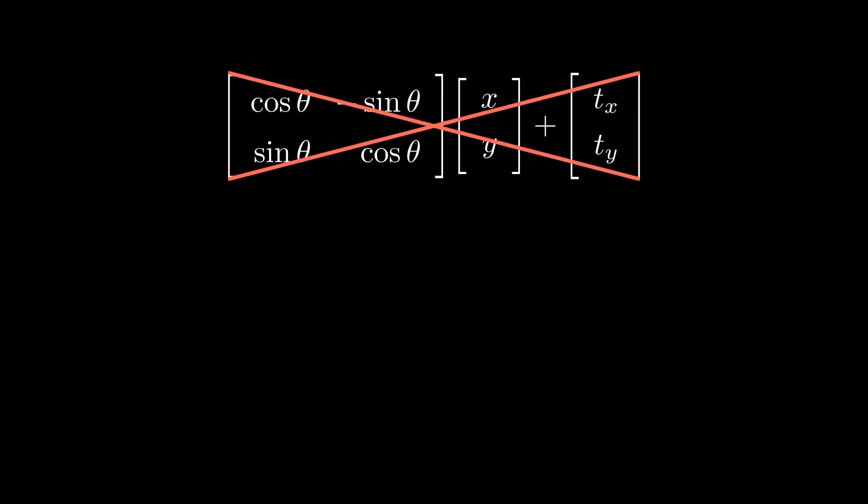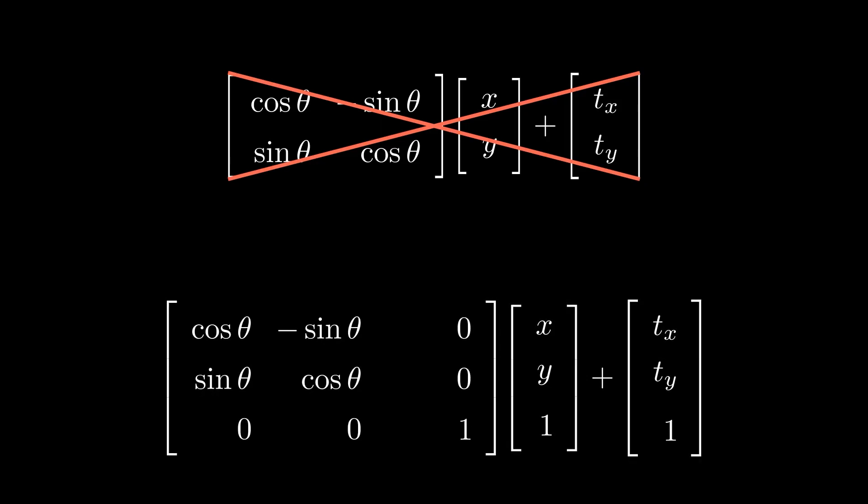Because we are now working with an n plus 1 dimensional vector, the size of our matrix should also change to match. For a 2D case, instead of this rigid body transformation, we pad 0s and 1s in appropriate places for bigger matrix. And we can still achieve the same rotation and translation as before. You can check that the additional 0s and 1s don't affect the result in any way.